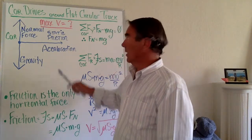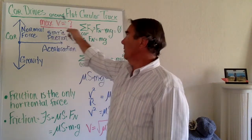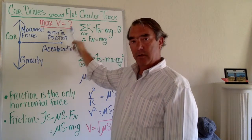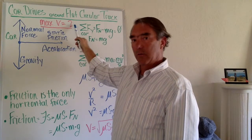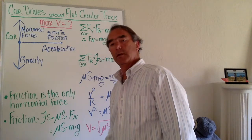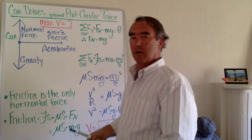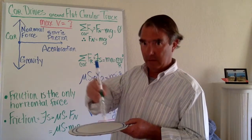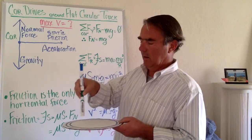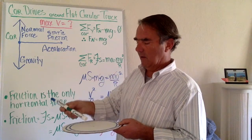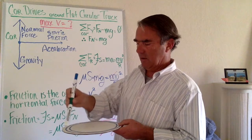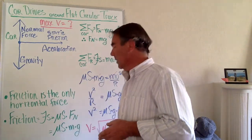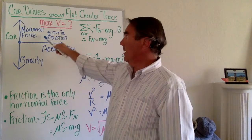The problem is that a car drives around a flat circular track. The question is: how fast can that car go before it starts to skid?